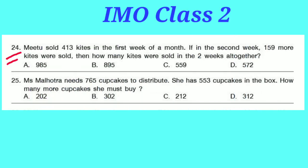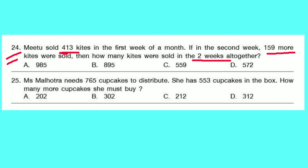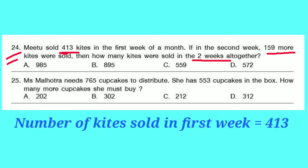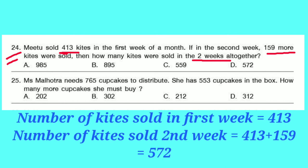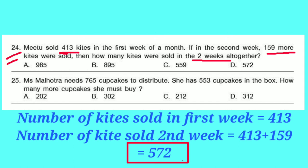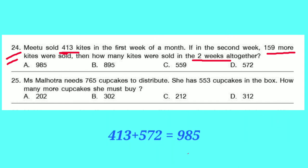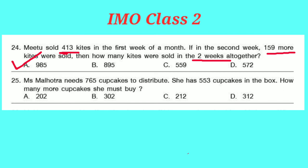Question number 24: Mitu sold 413 kites in the first week. In the second week, 159 more kites were sold. How many kites were sold in two weeks altogether? Kites sold in the second week: 413 + 159 = 572. Total kites sold in two weeks: 413 + 572 = 985. Option A is correct.